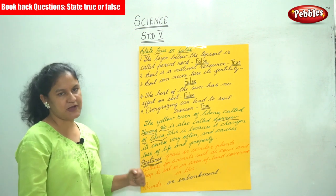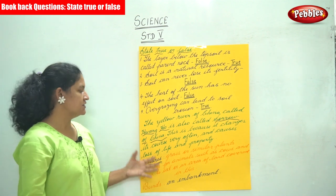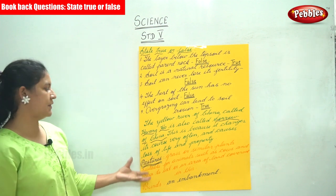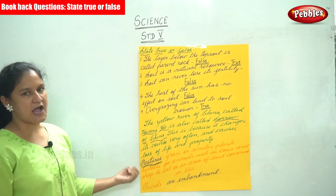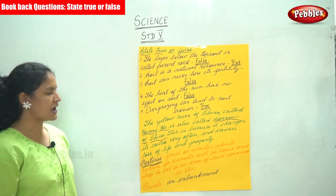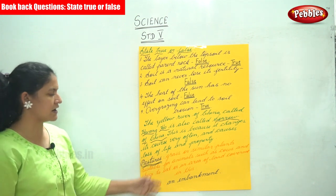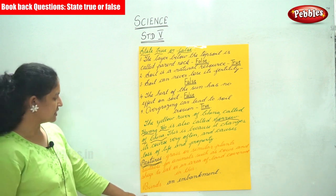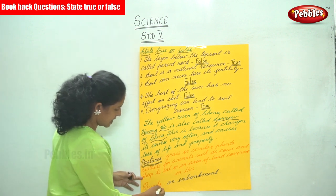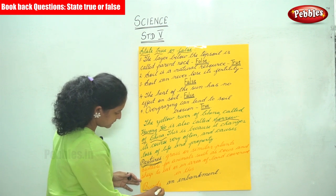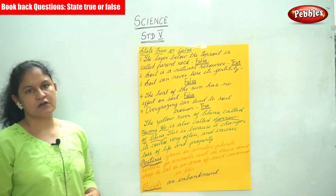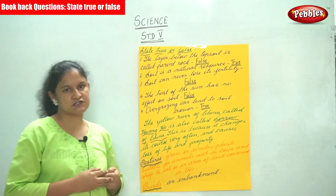Pastures are grass or similar plants suitable for animals such as cows and sheep to eat, or an area of land covered in this. The next term is bunds. Bunds are an embankment that stops the water from flowing and removing the soil.